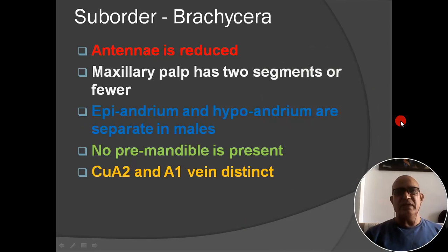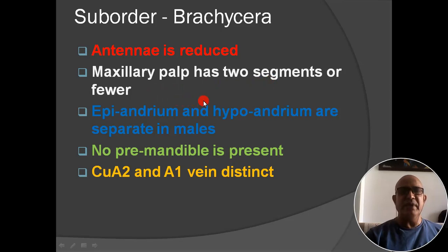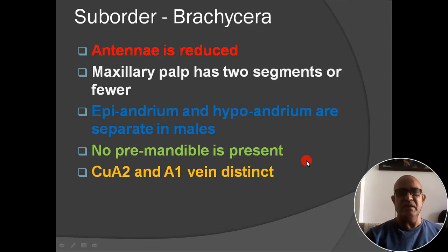Second suborder: Brachycera. Main characters: antenna reduced; maxillary palp has two segments or fewer; epandrium and hypandrium are separate; no premandible present; cubitus A2 and A1 veins are separate.